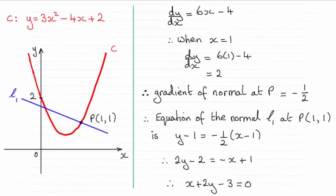Hi there. Now for this question we had to show that the equation of the normal through the point P is x plus 2y minus 3 equals 0.